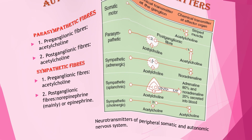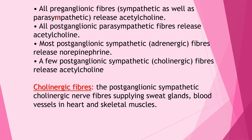All preganglionic fibers — sympathetic as well as parasympathetic — release acetylcholine. All postganglionic parasympathetic fibers release acetylcholine. Most postganglionic sympathetic adrenergic fibers release norepinephrine. A few postganglionic sympathetic cholinergic fibers release acetylcholine — these supply the sweat glands, blood vessels in the heart, and skeletal muscles.